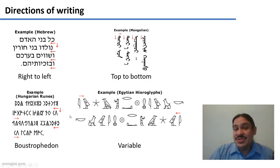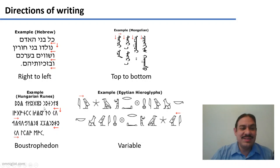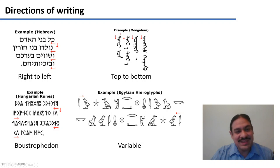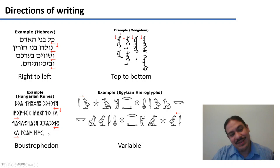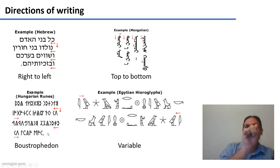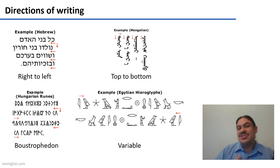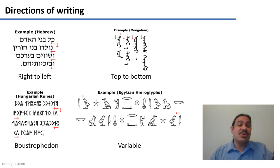There are two directions that Unicode does not support. One is boustrophedon — a really interesting one where you start a line from right to left, and when you hit the end you go left to right, then right to left again, alternating each line. Boustrophedon means hitting the end and starting in the opposite direction. Ancient Greek was written like this, and some types of runes were written this way too, but Unicode does not support it.